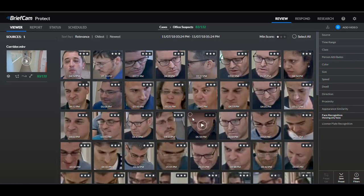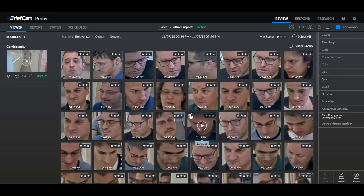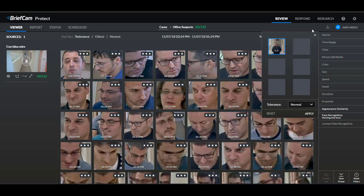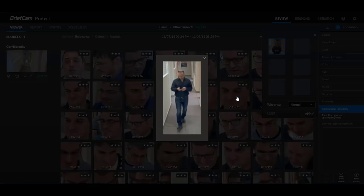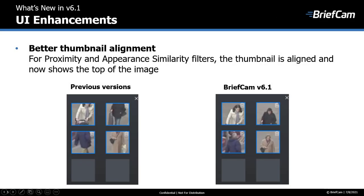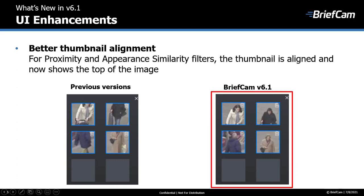For proximity, appearance similarity, and face recognition, if I add an item to the filter, we now have a zoom button here and you can click on it to see the entire thumbnail. For proximity and appearance similarity, the thumbnail of people is now aligned and shows the top of the image. This is what the filter used to look like, and you can see that in the new version the images are not cut off at the top.